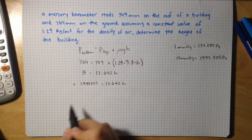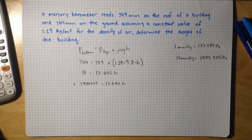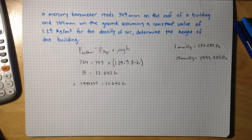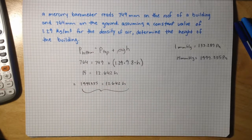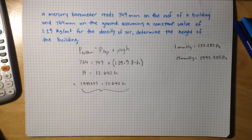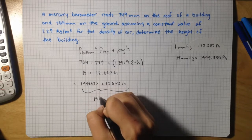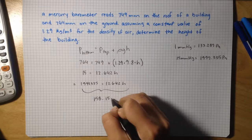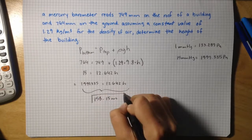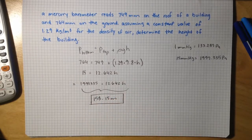Divide both sides by 12.642 and for our height we get 158.15 meters. This is the height of the building.